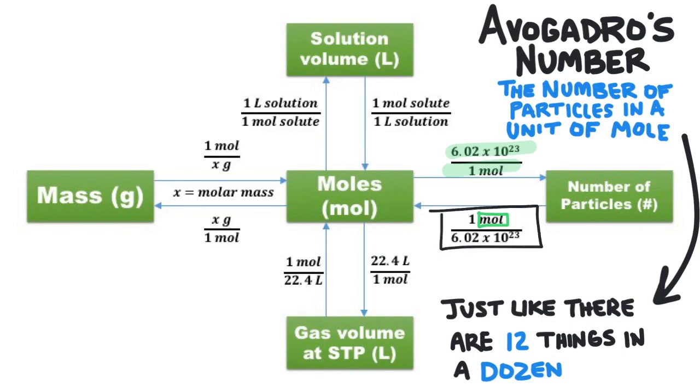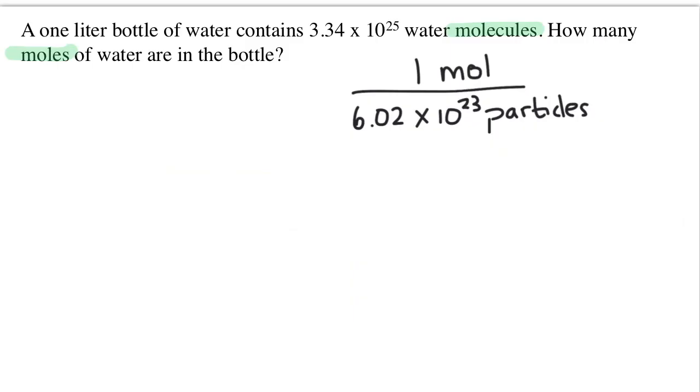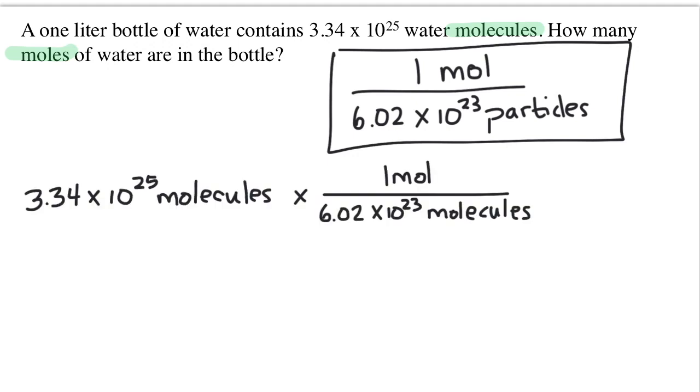So we will use 1 mole over 6.02 x 10 to the 23 particles. So the math becomes 3.34 x 10 to the 25 molecules x 1 mole over 6.02 x 10 to the 23.